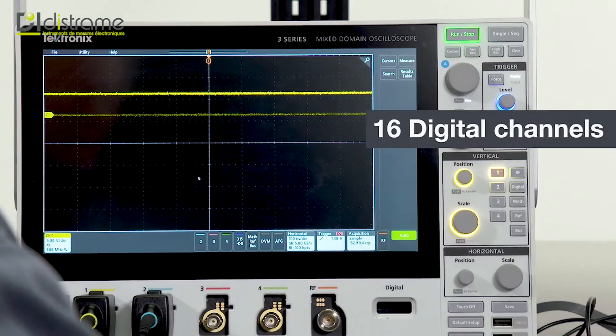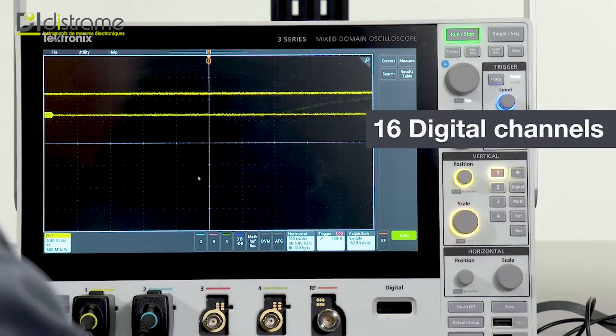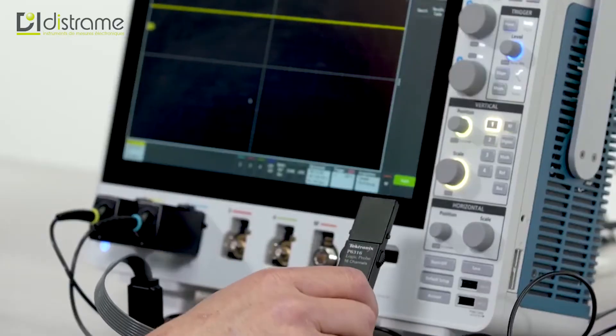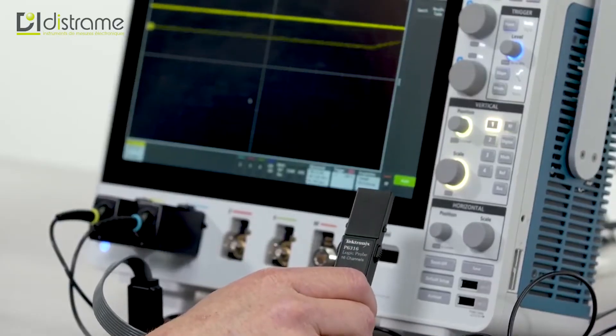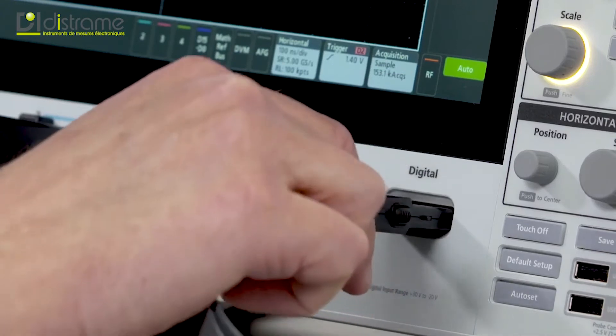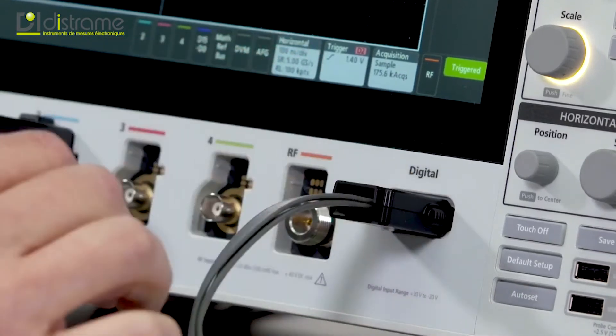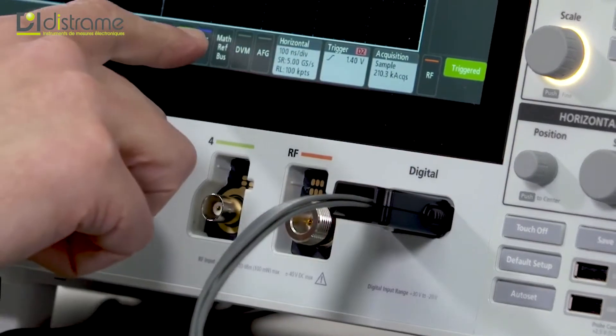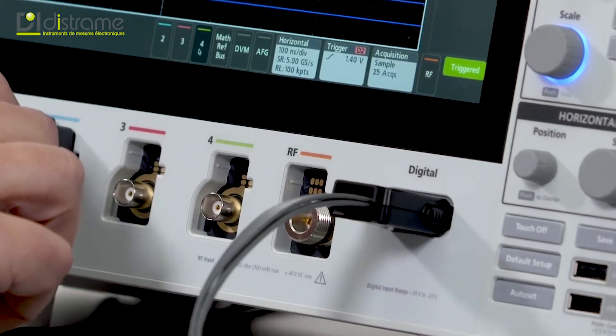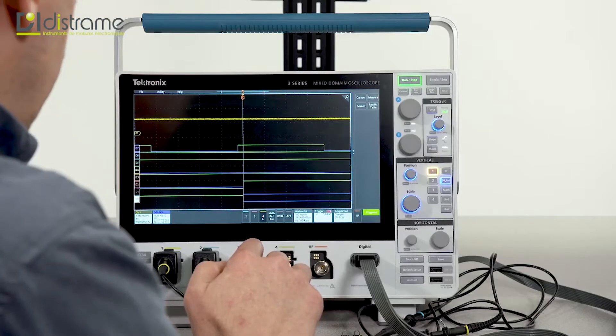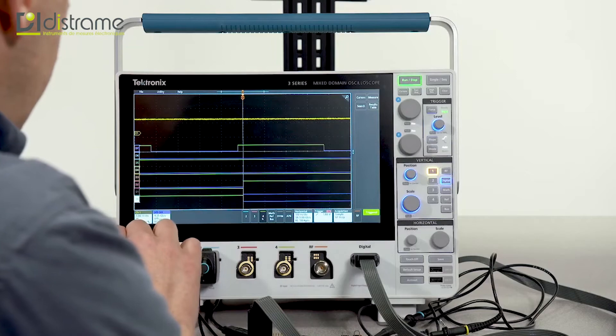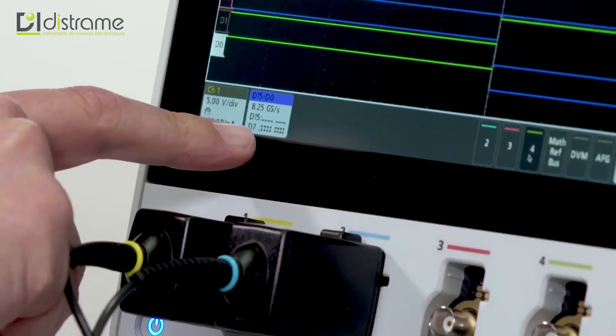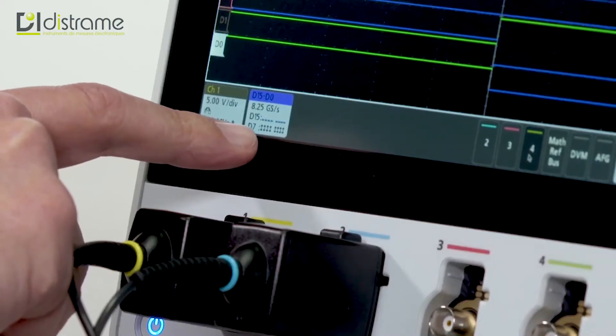You can further expand your system visibility with digital channels. With the MSO option, you get a 16-channel logic probe. When you plug in this logic probe, you can activate digital channels by simply touching the D15 to D0 button. Here, we're looking at eight digital channels, and the badge down here indicates activity on each of my digital channels.